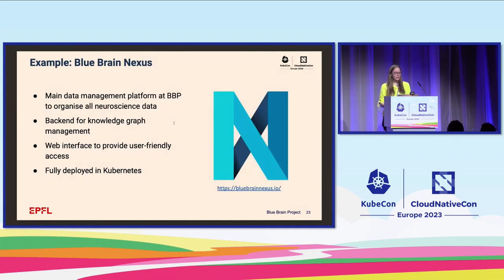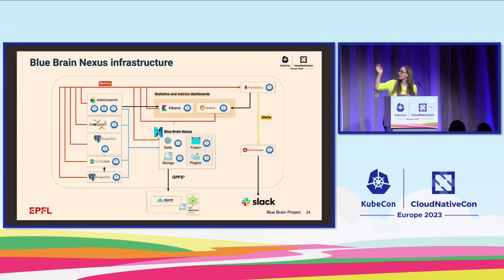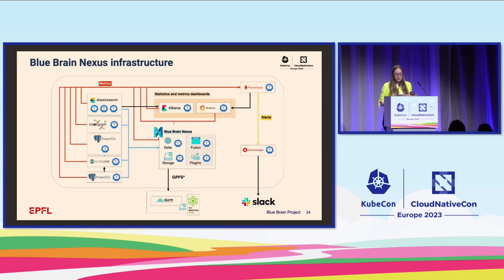I'll continue the presentation with the user's point of view. As I mentioned before, I work in the team developing Blue Brain Nexus, which is the main data management platform for the Blue Brain Project to organize all the neuroscience data. It has a backend for knowledge graph management and a web interface for a more user-friendly access for scientists. It's fully deployed in Kubernetes. The Blue Brain Nexus infrastructure consists of several different components: the Delta backend, Fusion frontend, storage, Elasticsearch, Blazegraph as the knowledge graph, PostgreSQL for data storage, Keycloak with its own PostgreSQL instance, Prometheus for metrics, Grafana and Kibana for visualization, and Alert Manager for sending alerts to Slack.